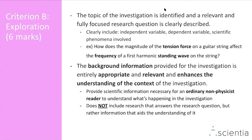Criterion B is exploration, worth six marks, making it one of the more important criteria. This exploration covers the research question, background information, and methodology. The research question asks what the investigation will be revolved around. You must clearly include the independent variable, the dependent variable, and the scientific phenomenon involved. For example, my research question was: how does the magnitude of the tension force on a guitar string affect the frequency of a first harmonic standing wave on the string? The tension force was my independent variable, the frequency was my dependent variable, and the standing wave was my scientific phenomenon.